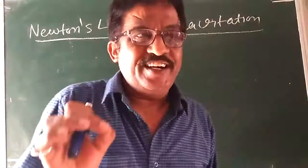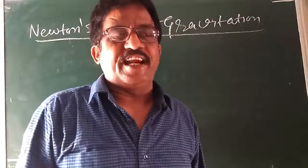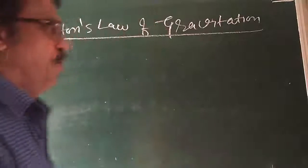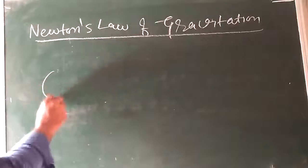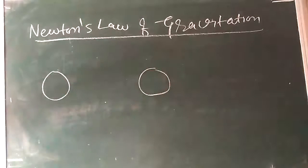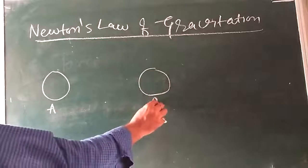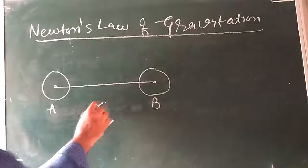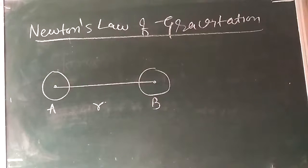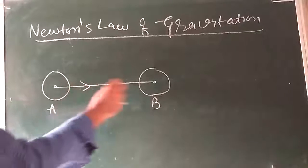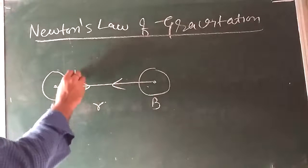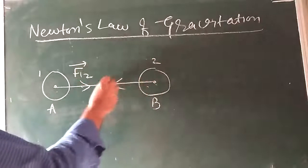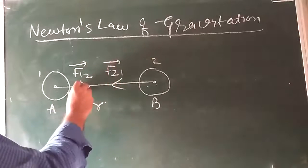Suppose we have two bodies near each other. One body is A and another body is B. The distance between the two bodies is R. The force acting from A to B is F₁₂, and from B to A is F₂₁. Both are equal and opposite.